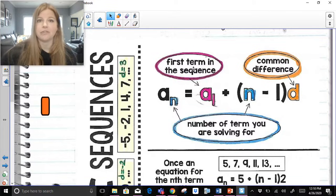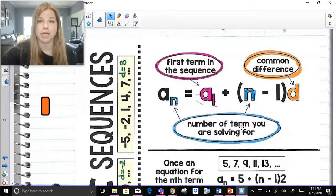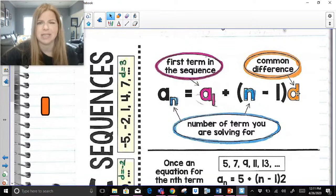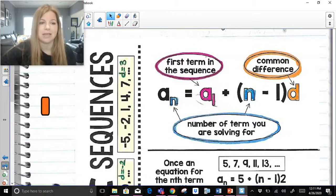Now here's the formula for an arithmetic sequence. a sub n, where n is the number of the term you're trying to solve for, is equal to a sub 1. a sub 1 just simply means whatever the first term in the sequence is, plus n minus 1, so that term you're trying to solve for, notice it shows up in this formula twice. Here though, it's just notation. Here it's actually part of the calculation. Minus 1, and then that difference is multiplied by whatever the common difference d is. Now this looks kind of crazy at first, and we're thinking where does this even come from, but let's take a look.